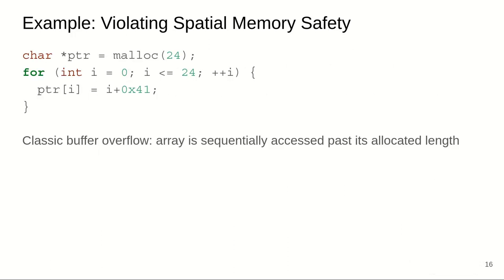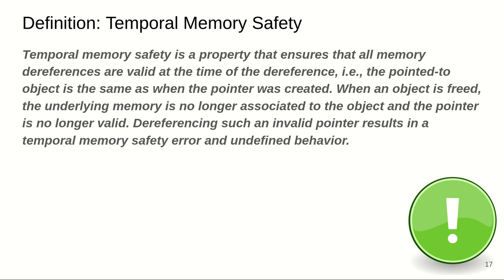Here's an example of a spatial memory safety violation. We have a pointer allocated to 24 bytes and we iterate through this area writing characters. We iterate from 0 to 24 inclusive, which actually accesses memory one byte past its bound — this results in a spatial memory safety violation, because we've been accessing each individual byte of memory and then going one past the end.